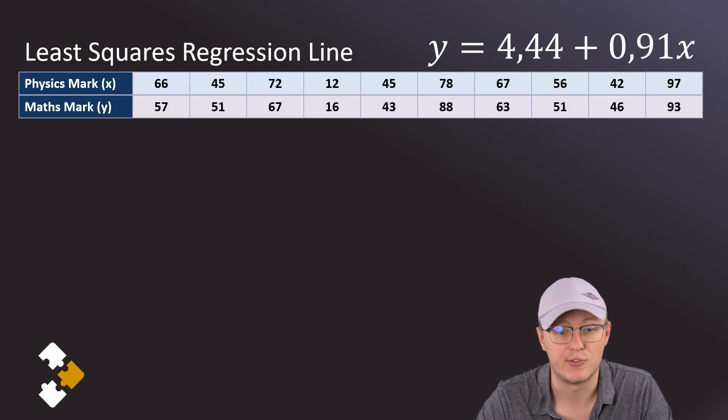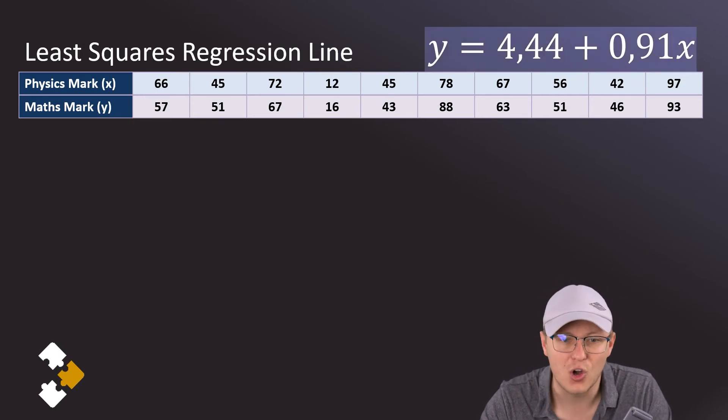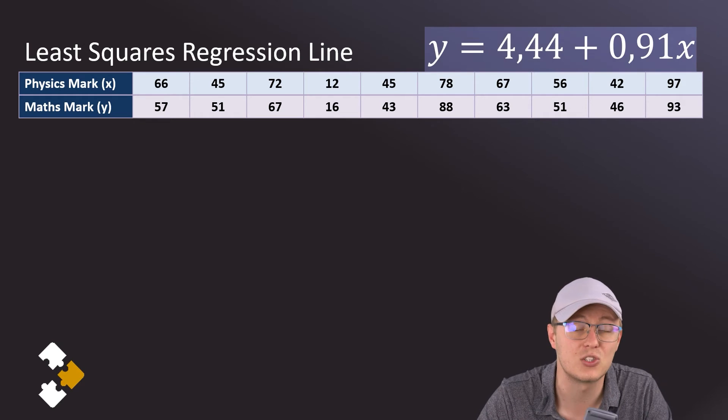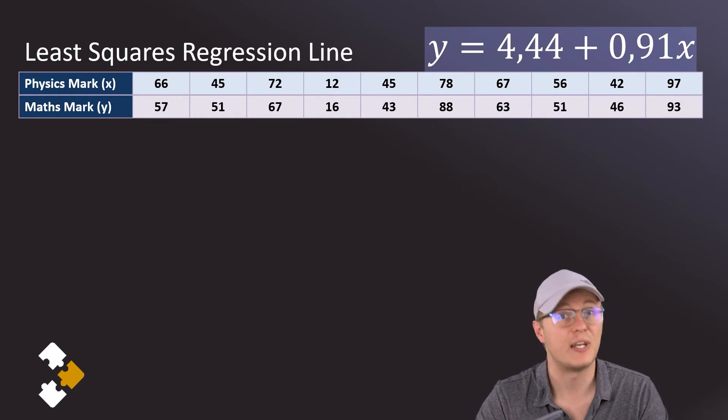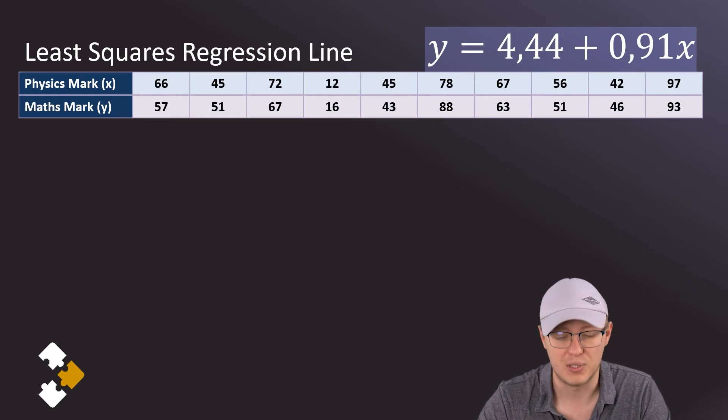So that's now the value of B, and now I've got an equation for my least squares regression line that has been calculated rather than being estimated.